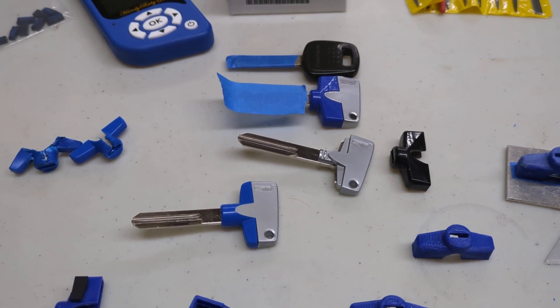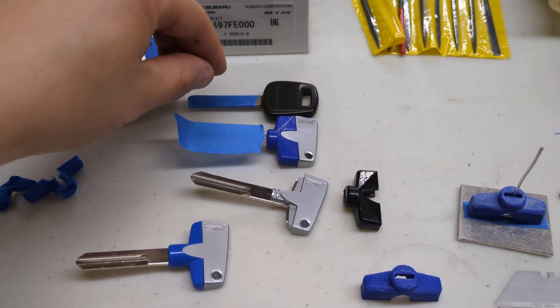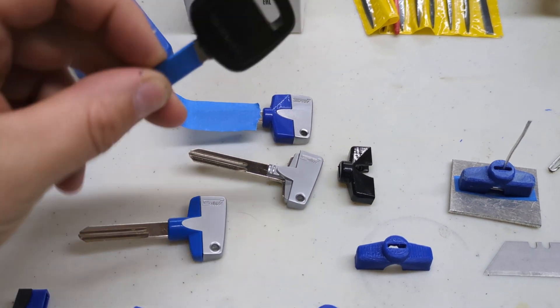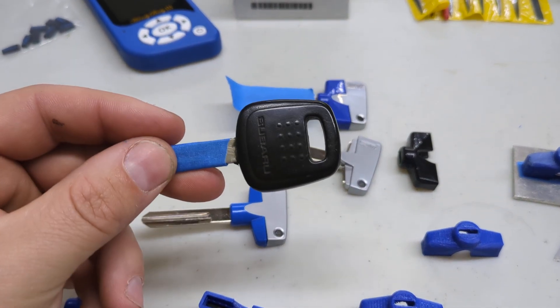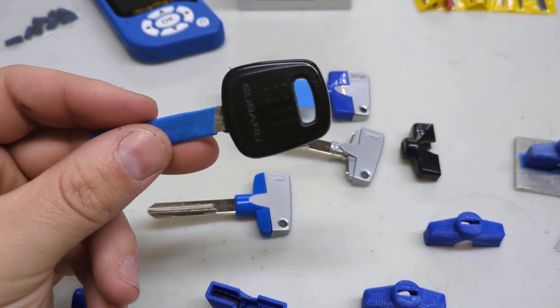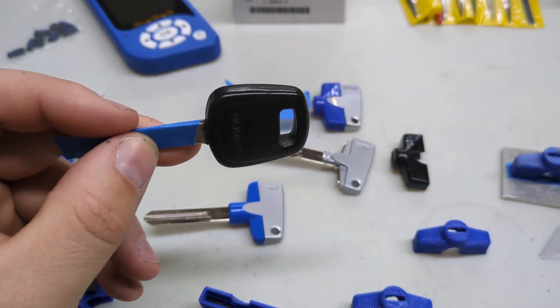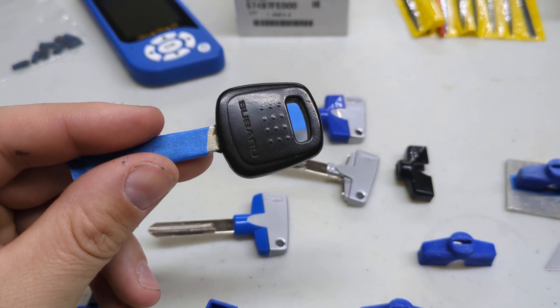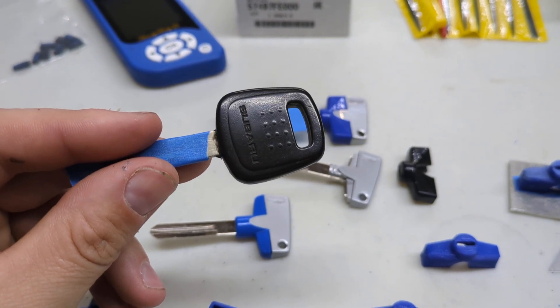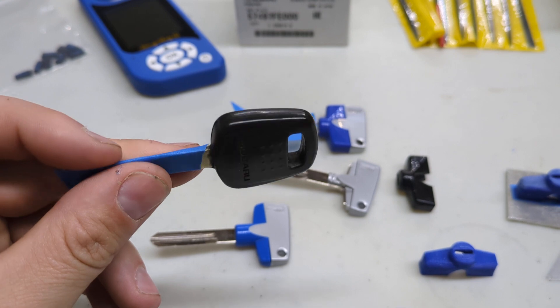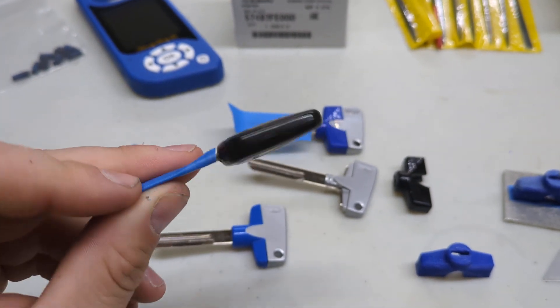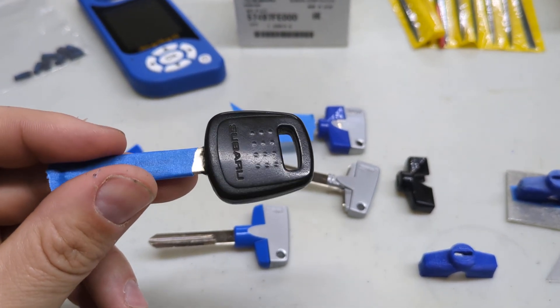But the problem is I couldn't use it on my car. My car is a 2006, and that's when Subaru went to the immobilizer system, which means this key has a chip in it that needs to get read by the antenna around my ignition cylinder.